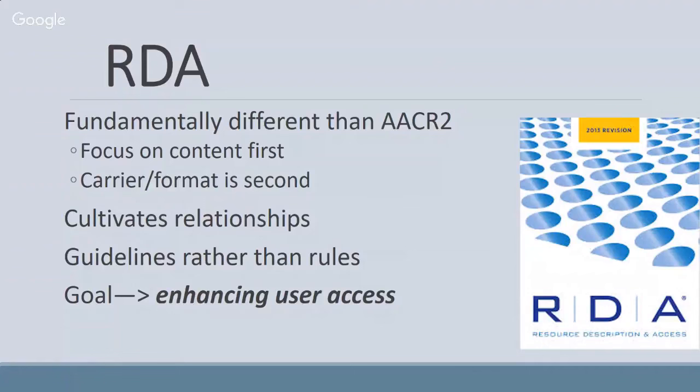With RDA, it's not so much that what we're dealing with is a DVD or an eBook or a paperback, but more about — is it the Lord of the Rings, or is it Hamlet? The relationship between content and creators is more integral to cataloging under RDA. Where AACR2, the Anglo-American Cataloging Rules second edition, was rules, RDA is instead guidelines. The bottom line with RDA is enhancing user access, because if users can't find the content, what good is the library to them?